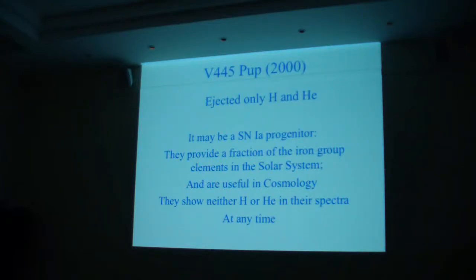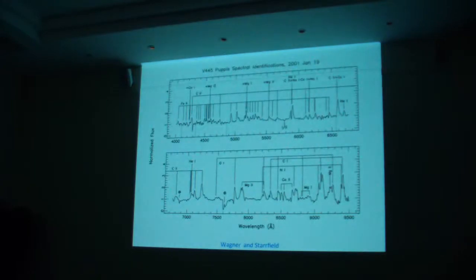You've seen images of V445 Pup. It ejected only, sorry, early this morning. It's carbon and helium. It may be a Type Ia progenitor because Type Ias, as you all know, show neither hydrogen nor helium in their spectrum at any time. So here is a spectrum that Mark Wagner and I got in 2001 at the multiple mirror telescope. And if you look closely, you will find no sign of hydrogen in that spectrum. There's some helium-1. But it's really cool.